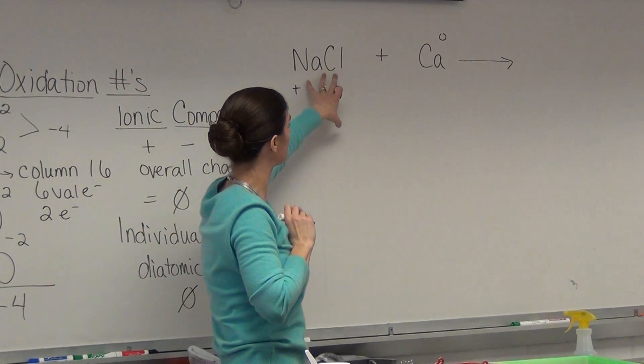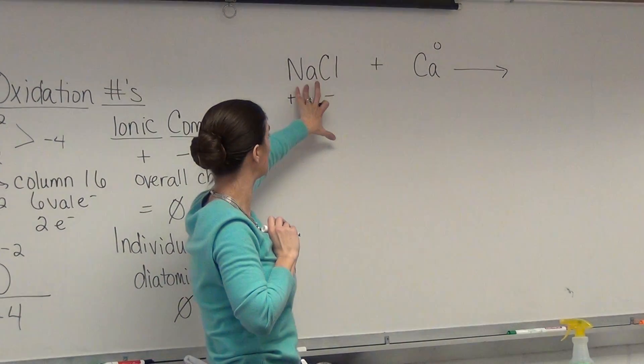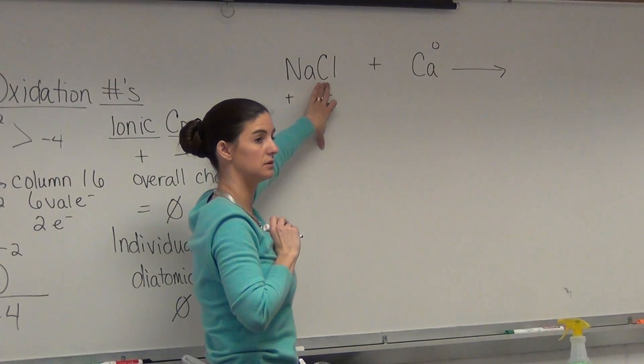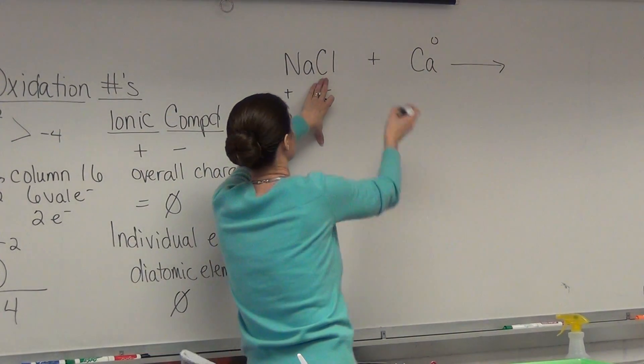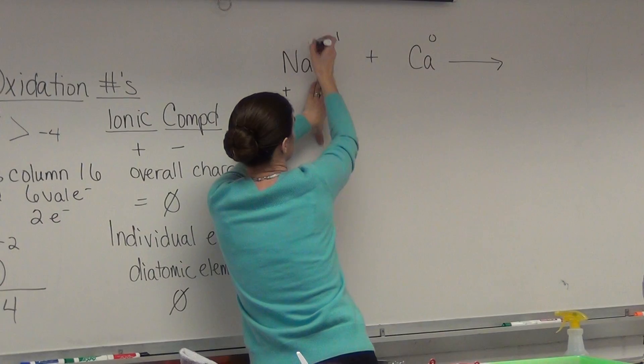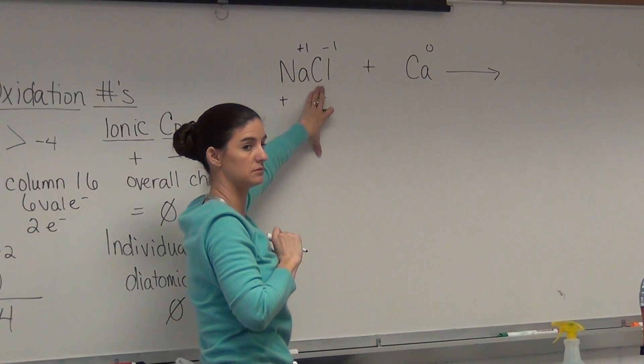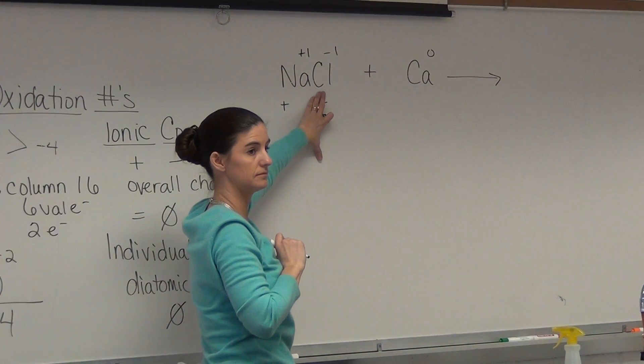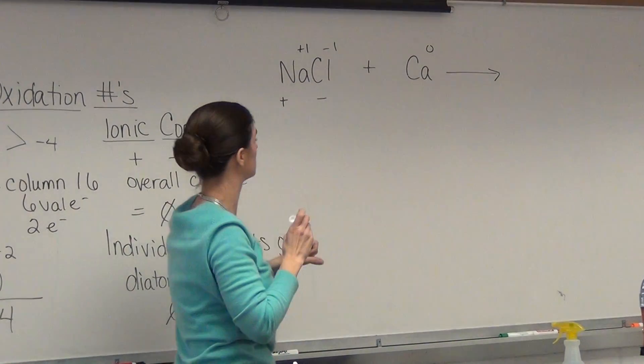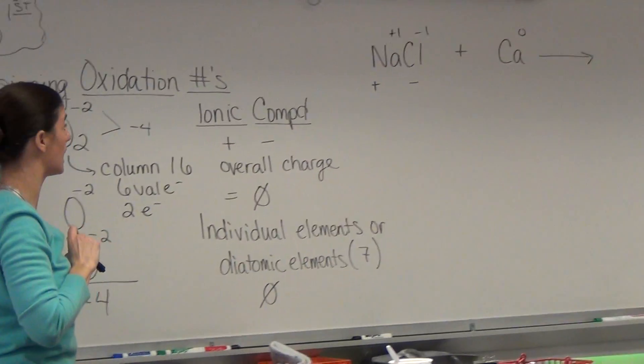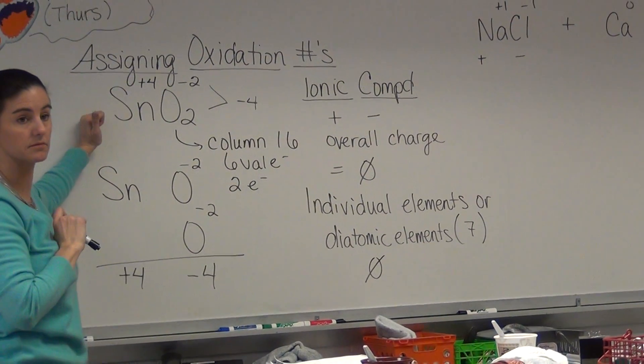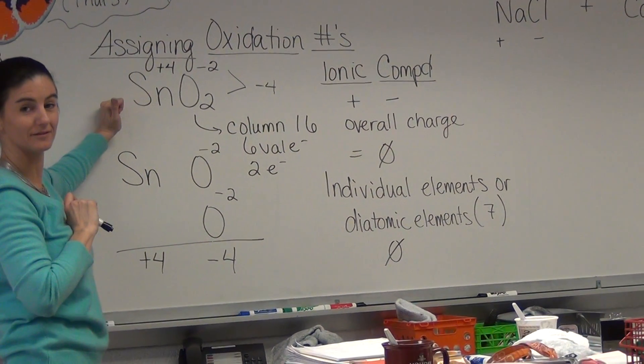So if we want to find out the oxidation numbers for Na and Cl, always look at the negative first. Minus one. Plus one. Does that make sense? So that's how we're going to assign oxidation numbers.